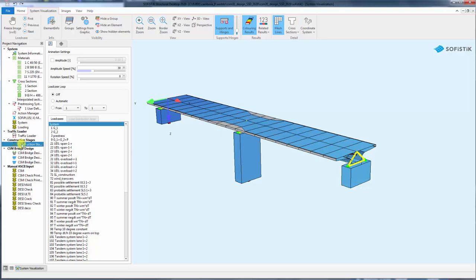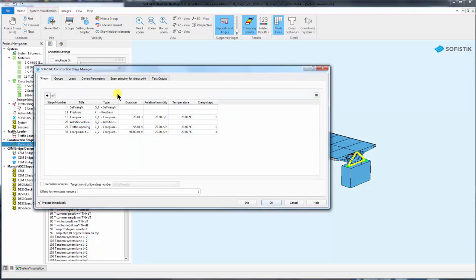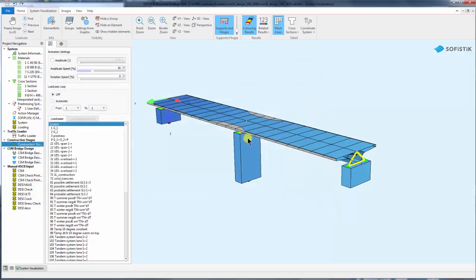The construction stages are analyzed with the construction stage manager, but we do not have real construction stages here. We use the CSM mainly to analyze creep and shrinkage.